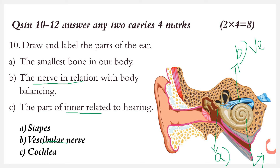The vestibular apparatus is related to body balancing. The inner ear contains structures for both hearing and balance.